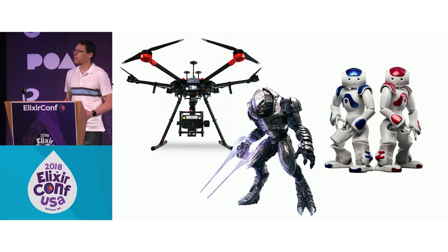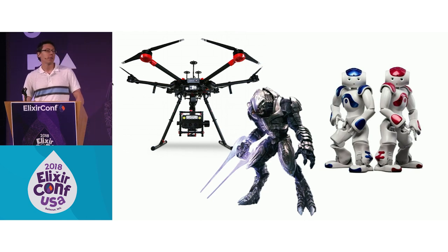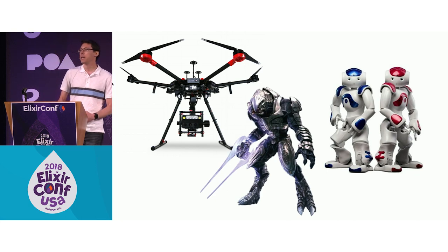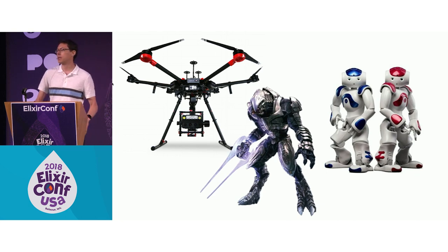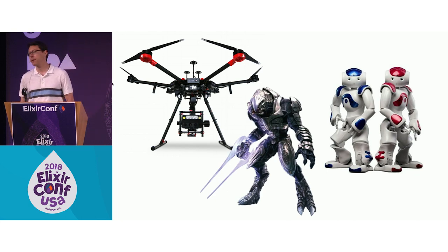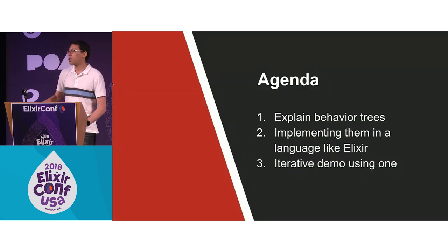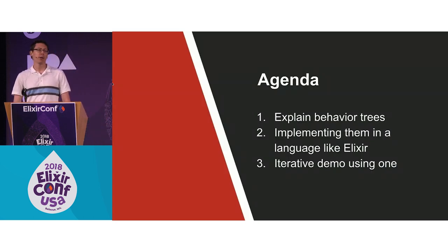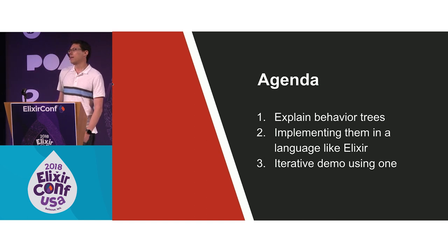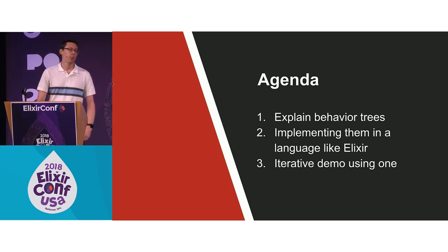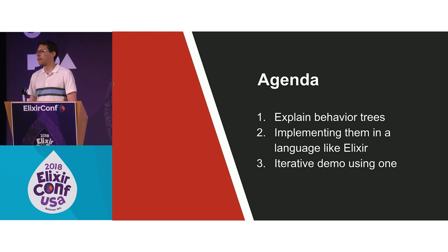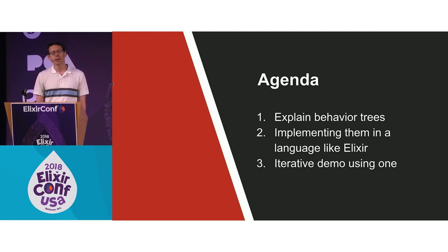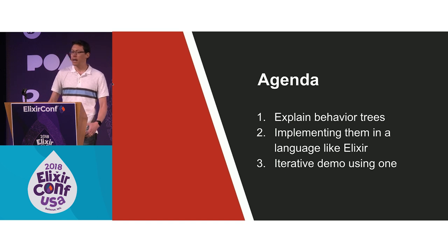When I tell people about behavior trees, most of the time they've never heard of them before. And I think behavior trees are a really fun and interesting pattern, so I'm excited to share them with you. I'm going to start off by going through what a behavior tree is, how it works, why you might use it. Then we're going to look at how to implement one, especially in a language like Elixir. And at the end, I have a fun demo where we will iteratively build up our own AI.